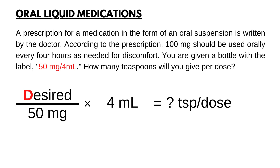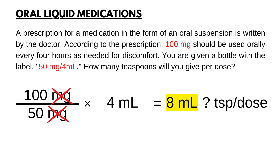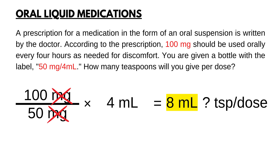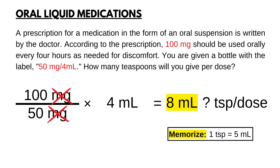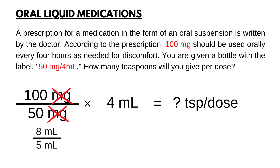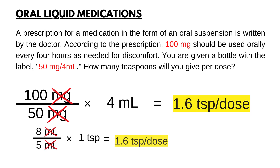For desired, you plug in the doctor's order: 100 mg. Since both units on top and bottom are the same mg, we can start calculating. 100 mg divided by 50 mg times 4 ml — milligrams cancel out and the answer is 8 ml. However, the answer needs to be in teaspoons per dose, so we need to convert. You need to know that 1 teaspoon is equal to 5 ml. Now we will convert ml to teaspoons: 8 ml divided by 5 ml times 1 teaspoon. The final answer is 1.6 teaspoons per dose.